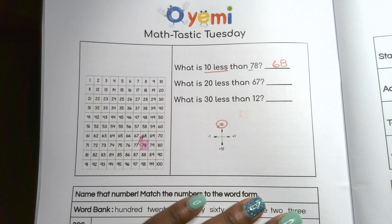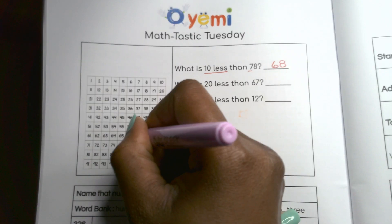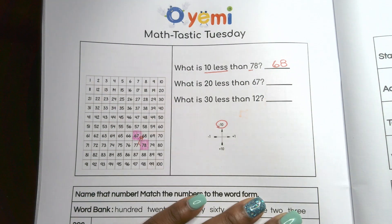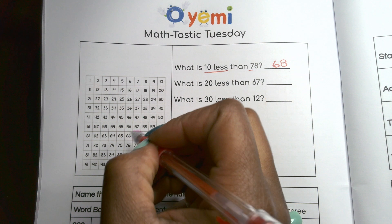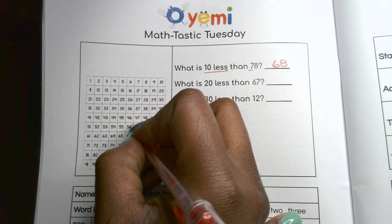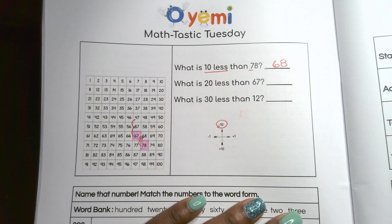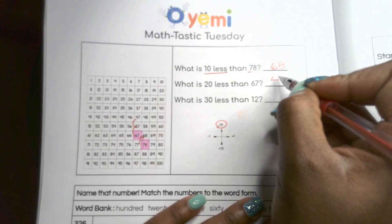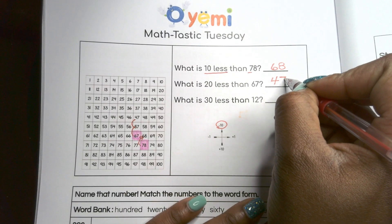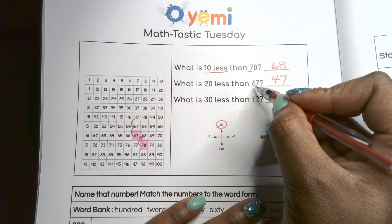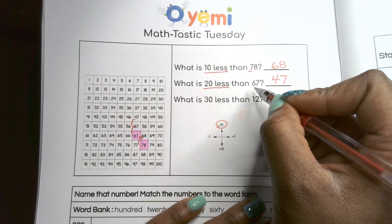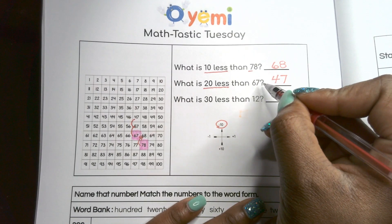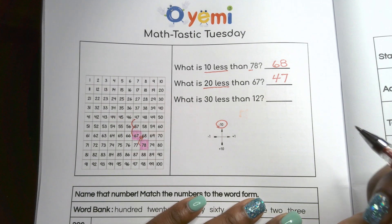Now I want to do 20 less than 67. I highlight 67 — 10 less would be going up one row, and 20 less would be going up two rows, so I'd end up at 47. Those of us who can do it mentally: take that 60 and subtract 20 — 60 minus 20 is 40. Notice the ones place stays the same; I'm only working with the tens.